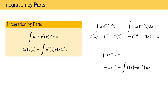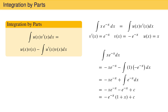Pulling the negative sign out in front of the second term, we obtain negative x e to the minus x plus the integral of e to the minus x. Evaluating that integral gives the result as minus x e to the minus x minus e to the minus x plus a constant of integration. Factoring out e to the minus x gives minus e to the minus x times the quantity 1 plus x.